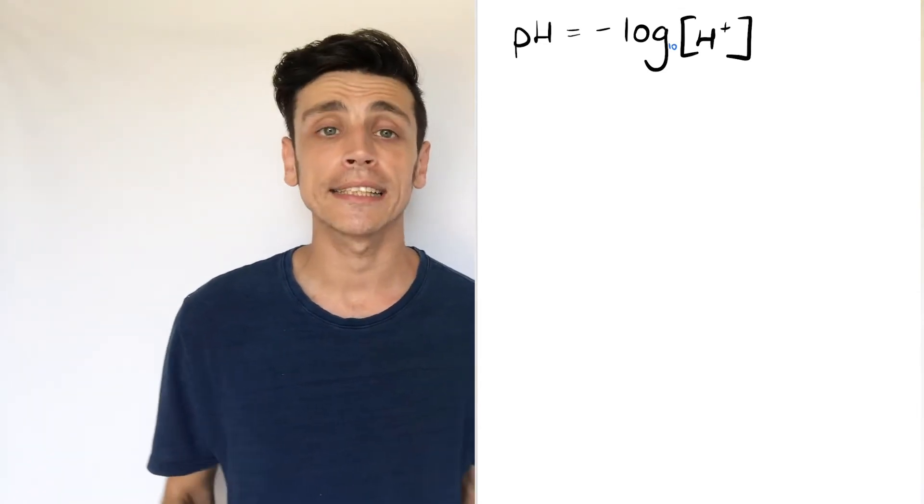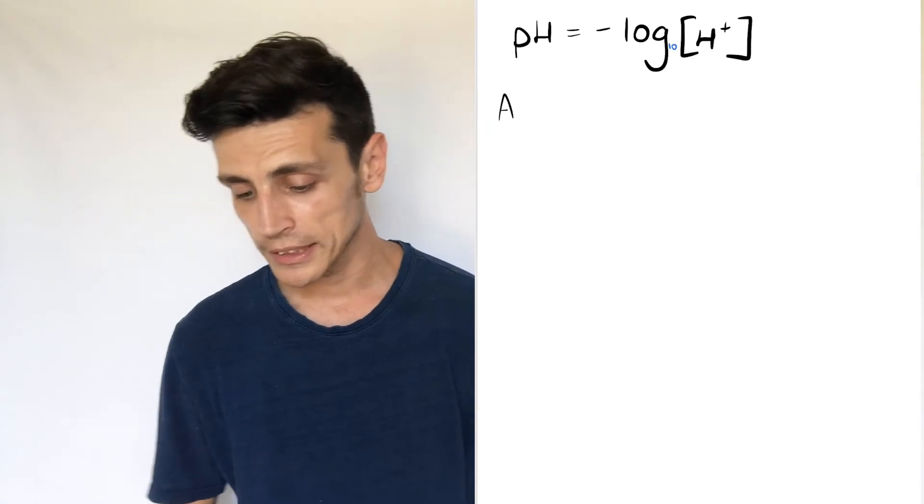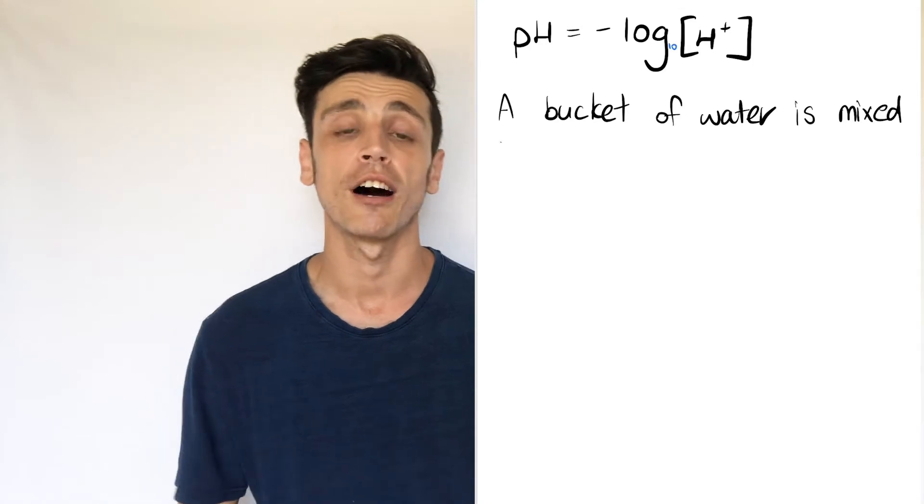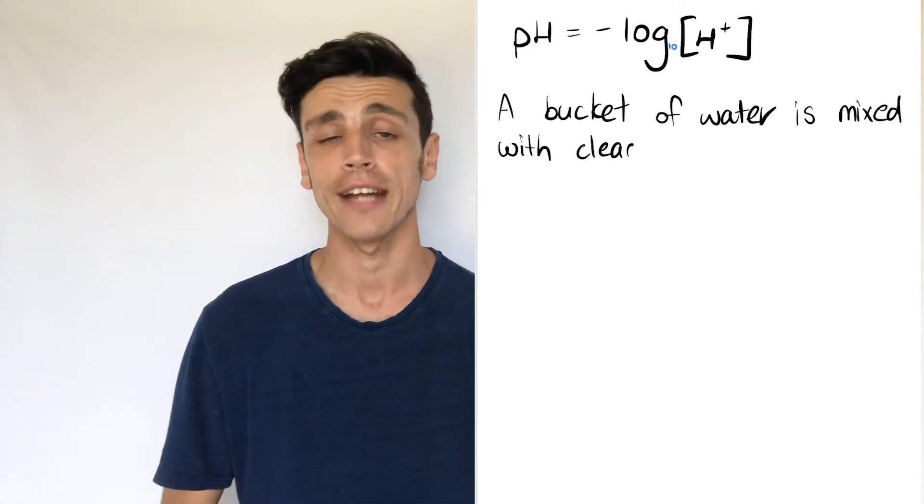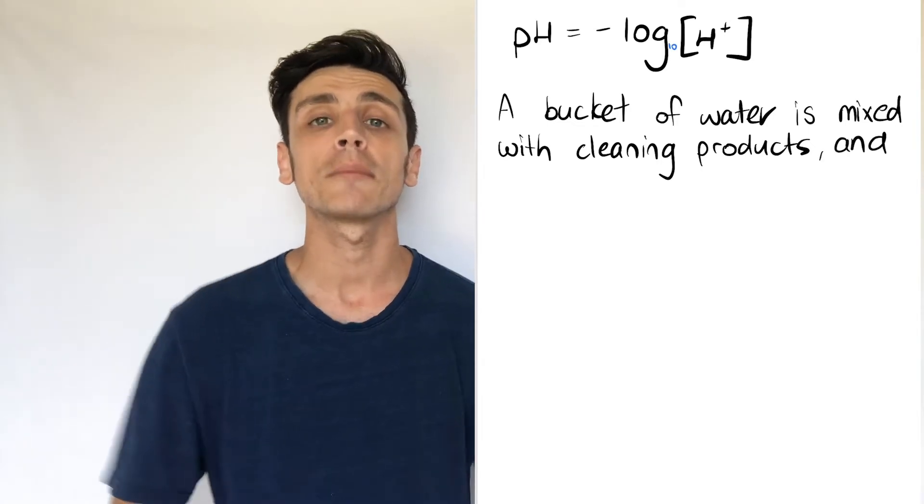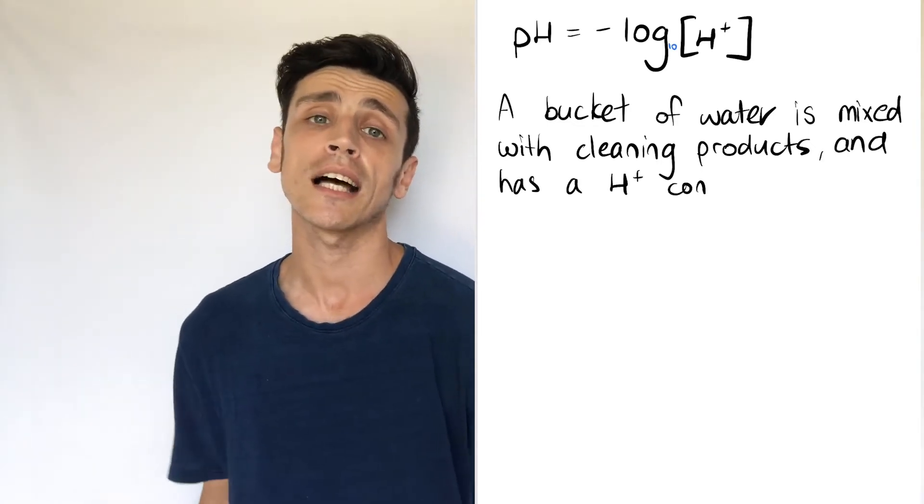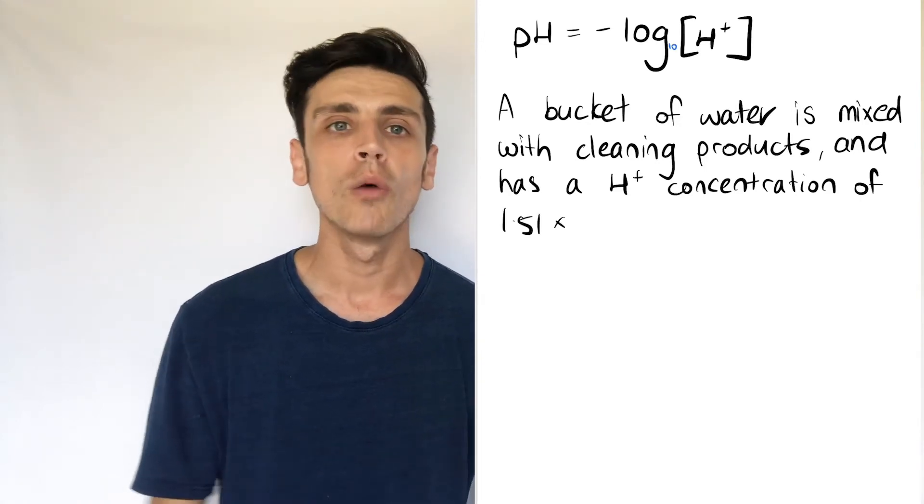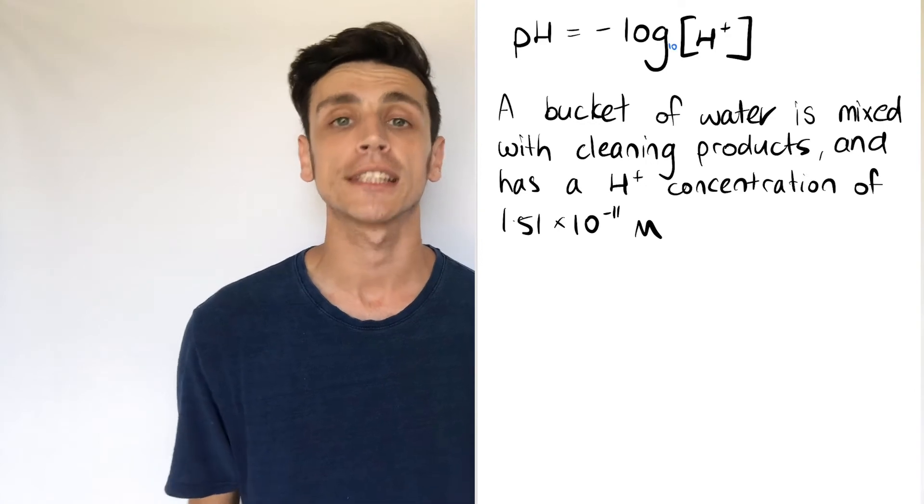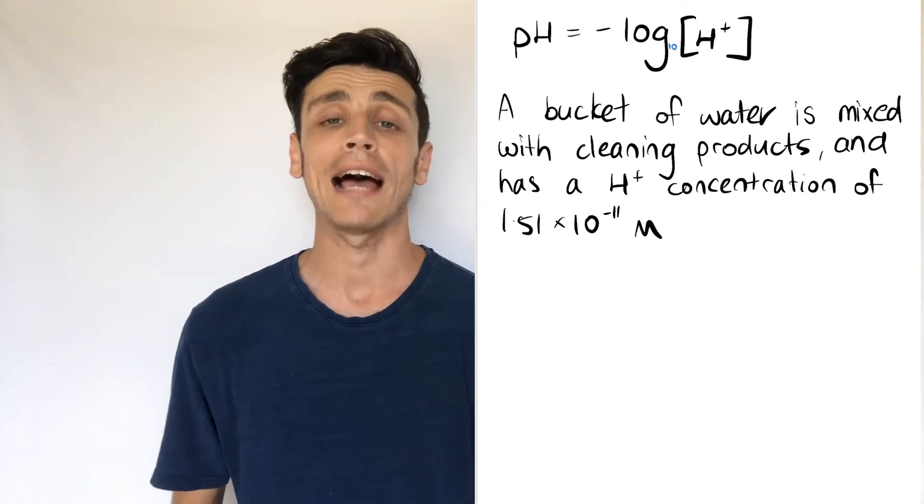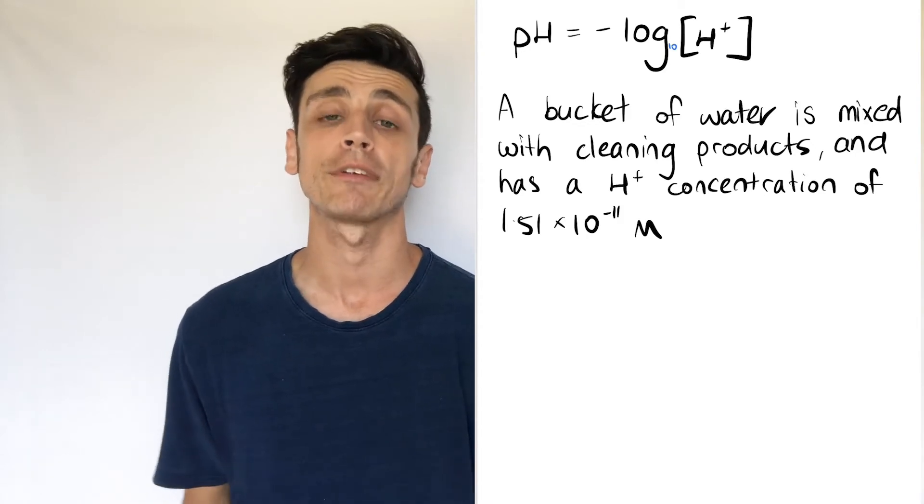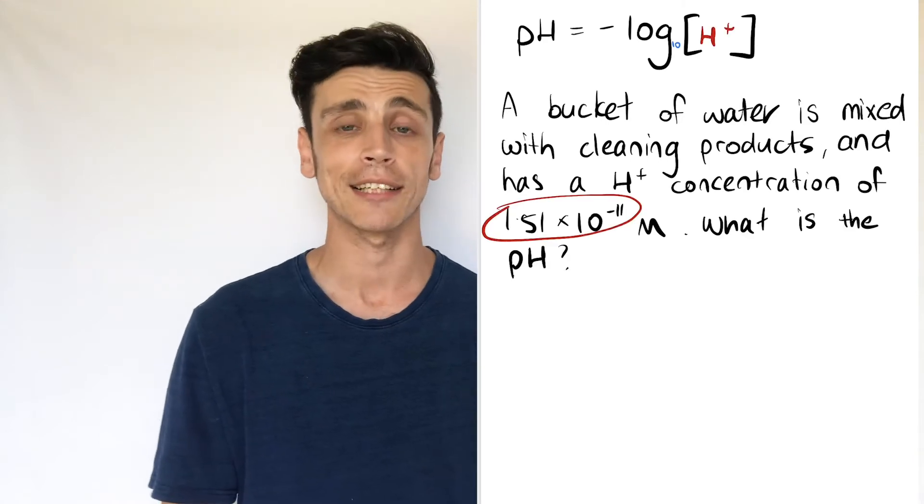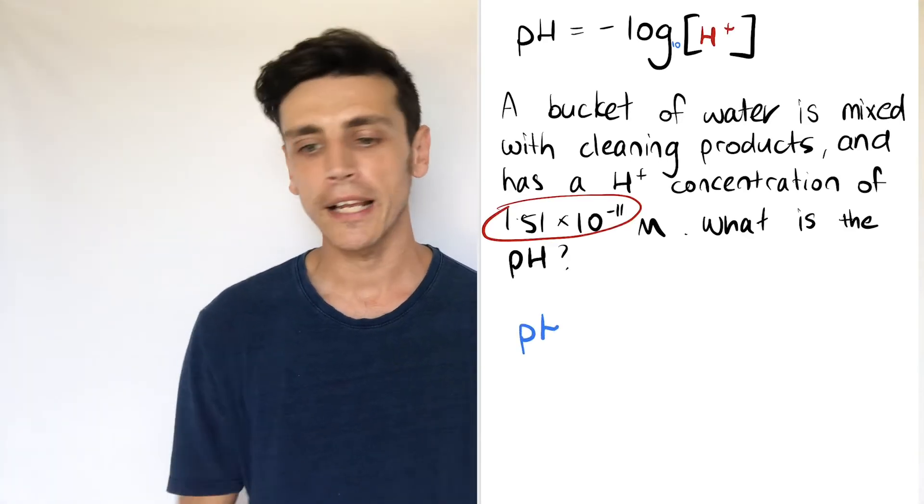The first one we've got here is a bucket of water mixed with some cleaning chemicals, and we're given that this solution has a H+ concentration of 1.51 times 10 to the power of negative 11. Now knowing that cleaning products are on the basic side, I can already make the assumption that it's going to be higher than the value of 7. Also when dealing with inverse logs, the smaller the number is, the bigger our value is, which again would indicate I'm going to get something on the higher end, closer to 14 as opposed to a lower value closer to 0 on our acidic side. But let's put it in our formula anyway.